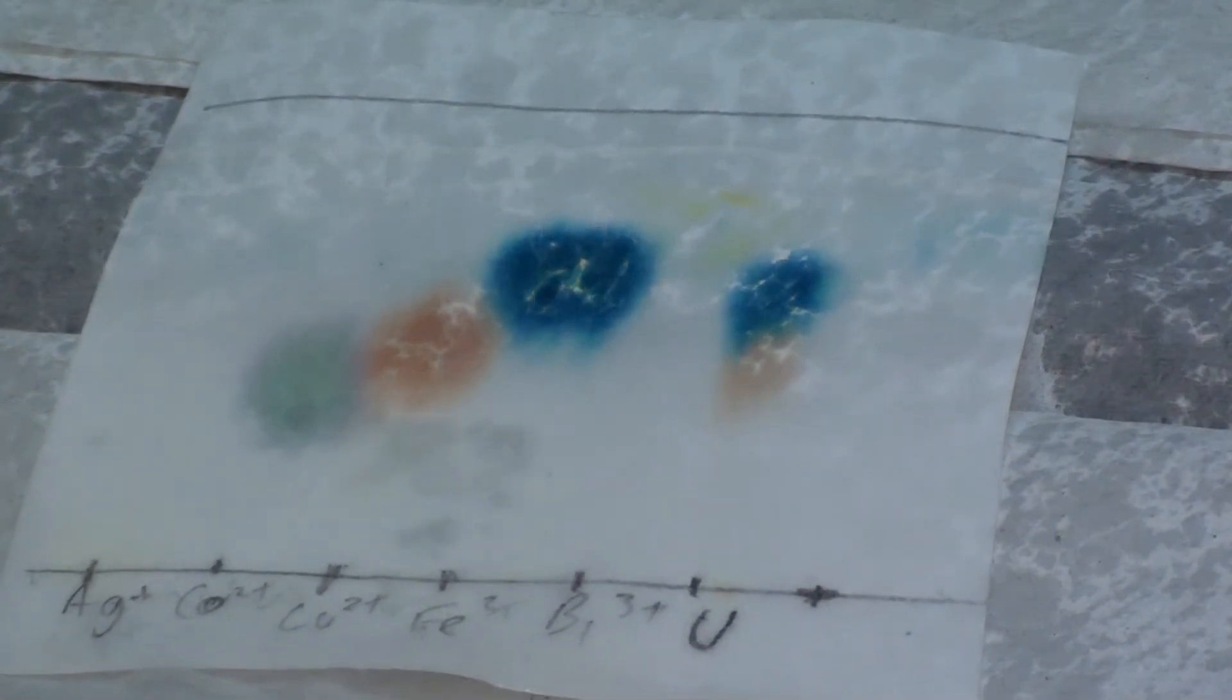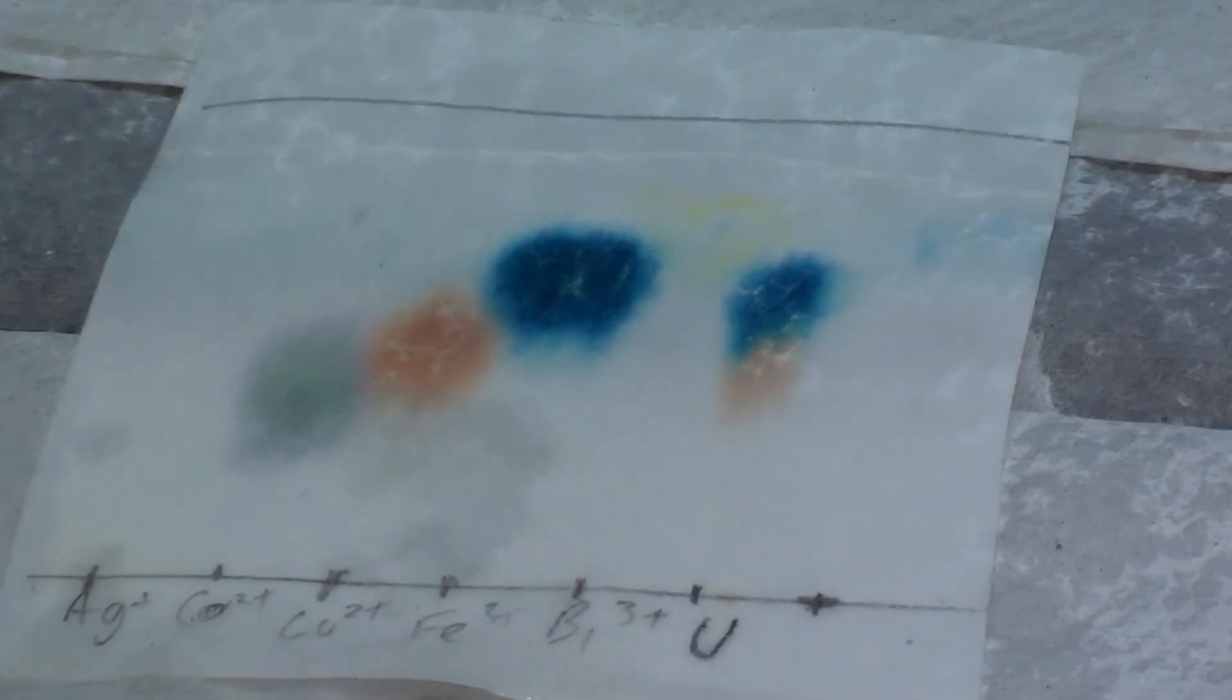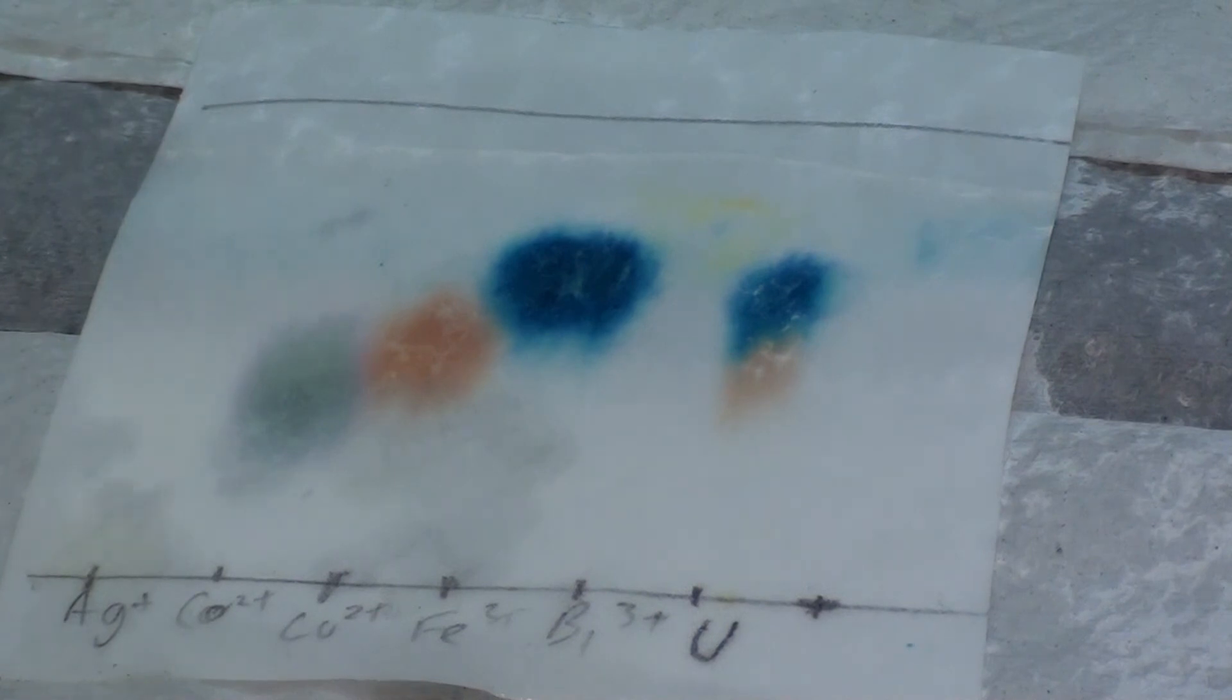So now what I'm going to do is I'm going to stain the TLC paper or the plate. And I've got this staining reagent right here. And I'm going to just go ahead and spray the plate with it and it will make some of these things turn different colours. Now what I'm going to do is I'm going to go ahead and dry this.